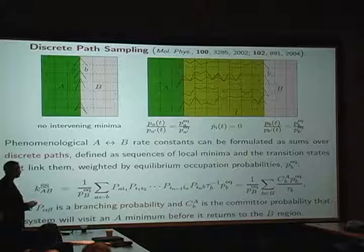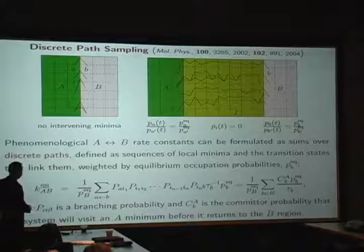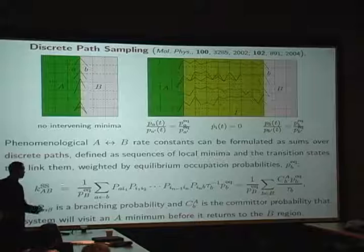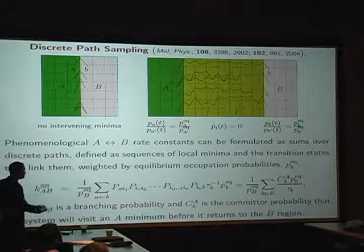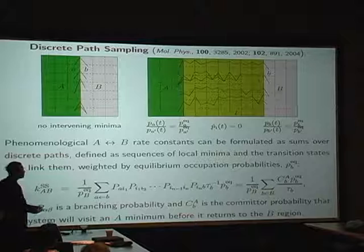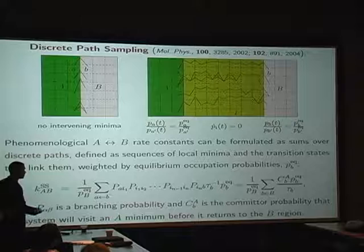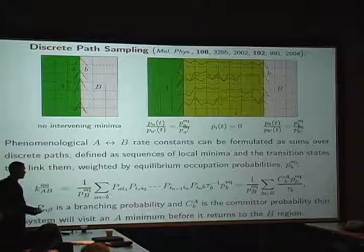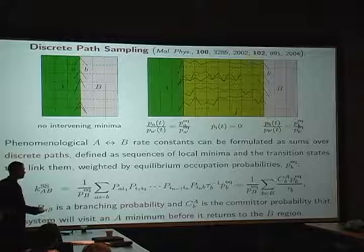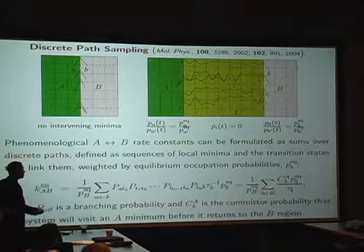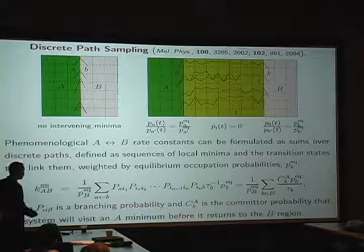And you can do a bit of maths and work out that this overall rate constant, B to A, SS stands for steady state, can be written as an infinite sum of all the possible pathways between B and A. The conditional probability is P little b divided by P big B. And these capital P's are branching probabilities. So given that I'm in I2, what's the probability that I go to I1? And after scratching your head for a few years, you realize that actually this can be written in terms of a committer probability. And this is Onsager's committer probability that he thought about for dissociation of sodium chloride in water originally. And it's a nice, neat, compact formula. This is the probability that the system will visit an A, a product, before it returns to reactant.